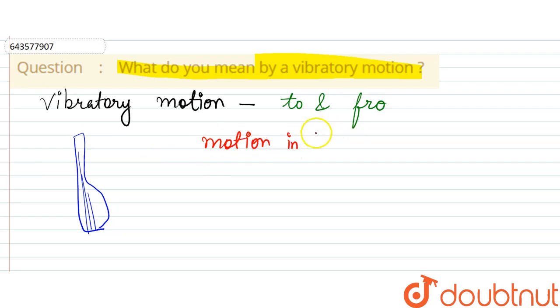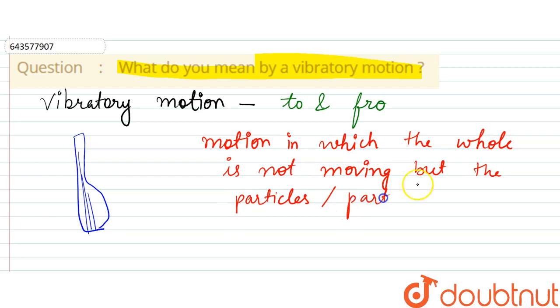in which the whole is not moving - the guitar is not moving, right - but the particles, or part of it, is in to and fro motion. For example, and another example I can give is...